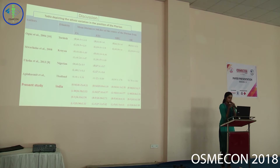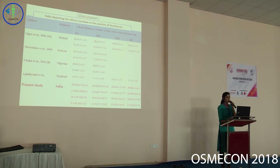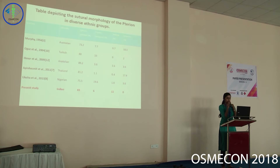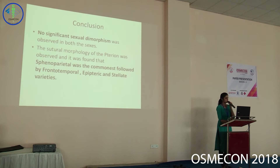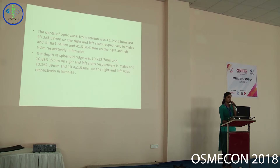Comparing my study to other studies, the Turkish and Nigerian populations have a higher and more posterior Pterion location. My study does not show sexual dimorphism, which is not consistent with studies on Thai skulls that do show significant sexual dimorphism. A table depicting the morphology of the Pterion in diverse ethnic groups is consistent with my study in that sphenoparietal is the most common type. In conclusion, there was no significant sexual dimorphism, morphology was sphenoparietal followed by frontotemporal, epiteric, and stellate, and all objectives were achieved by measuring the linear distance of the Pterion from specific landmarks.